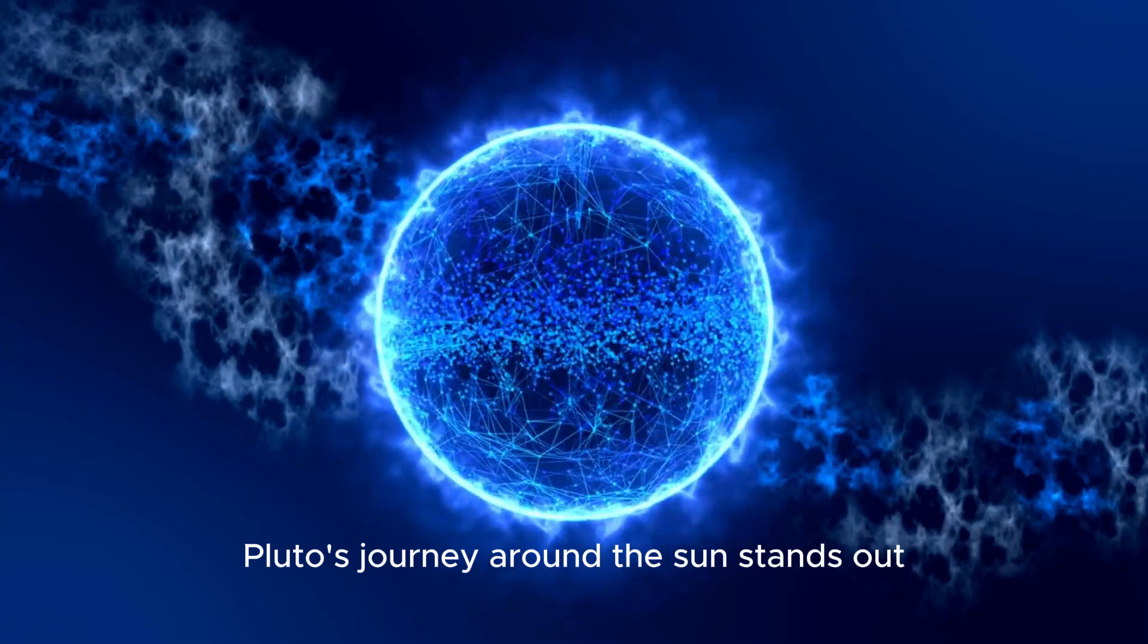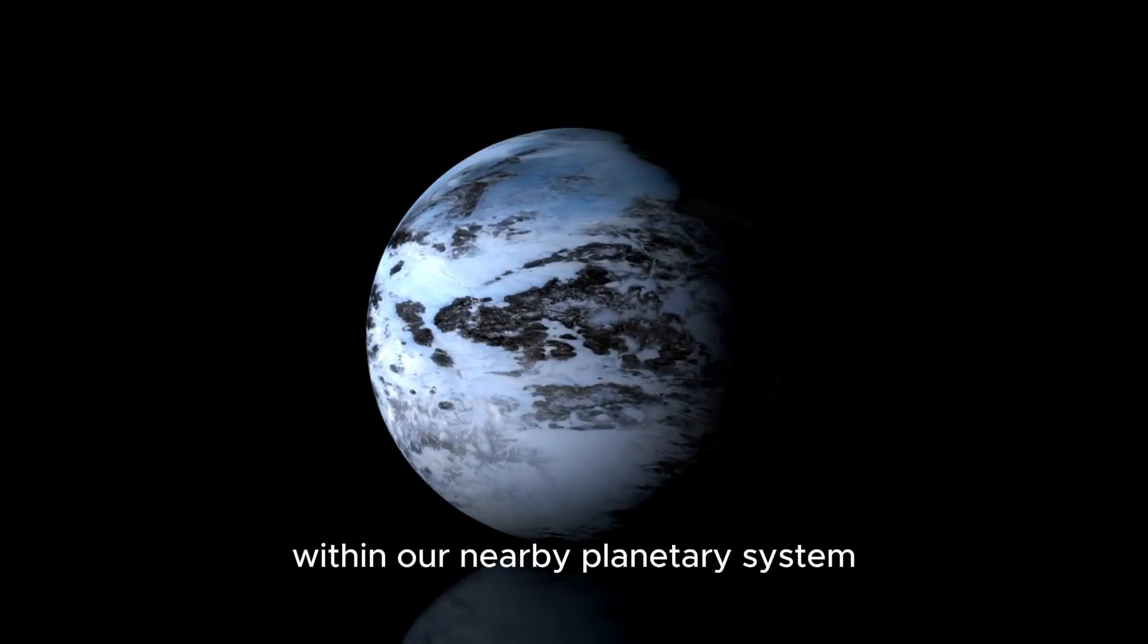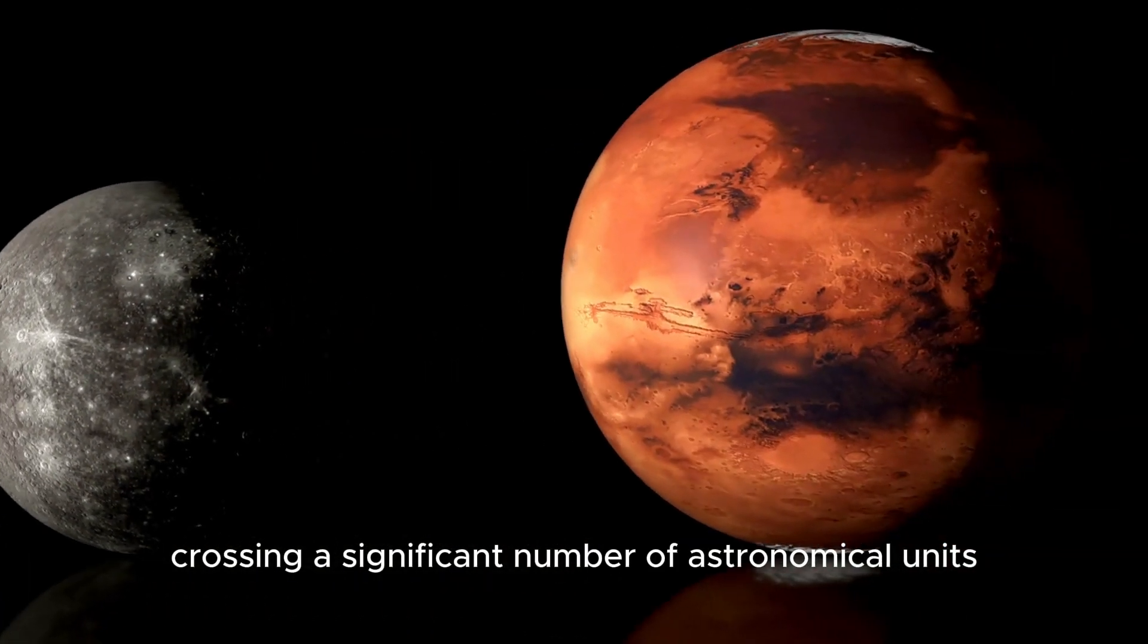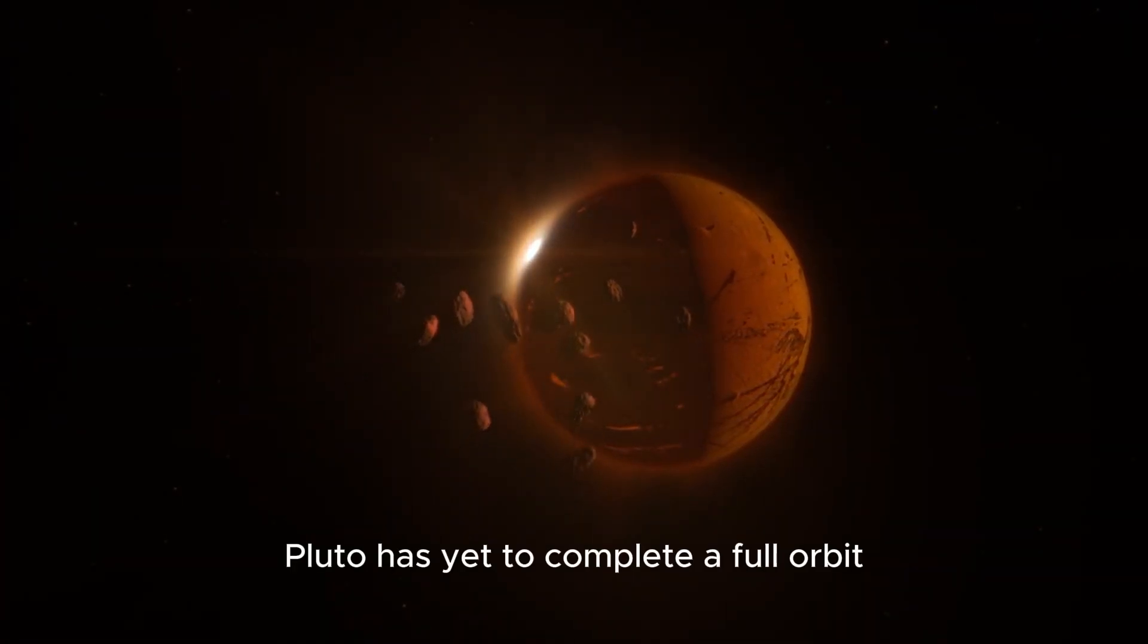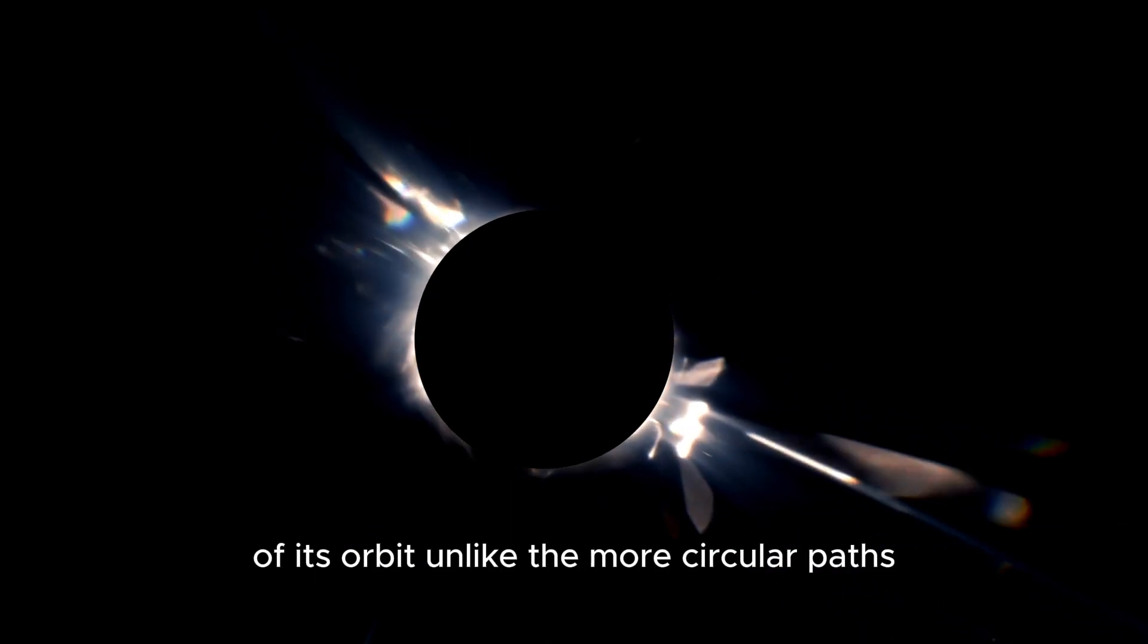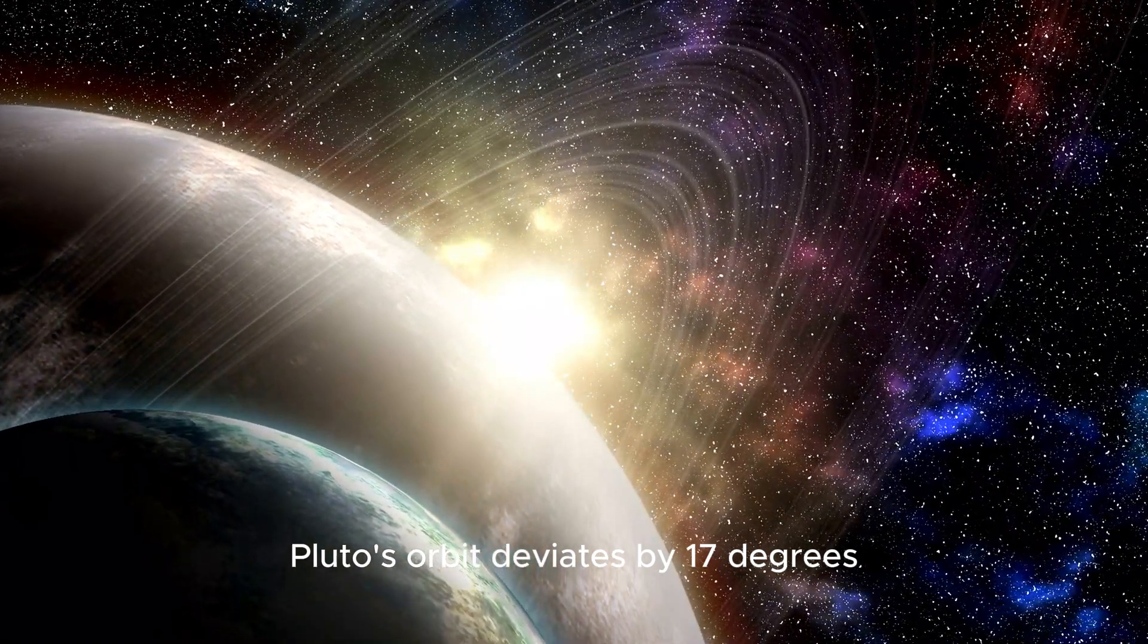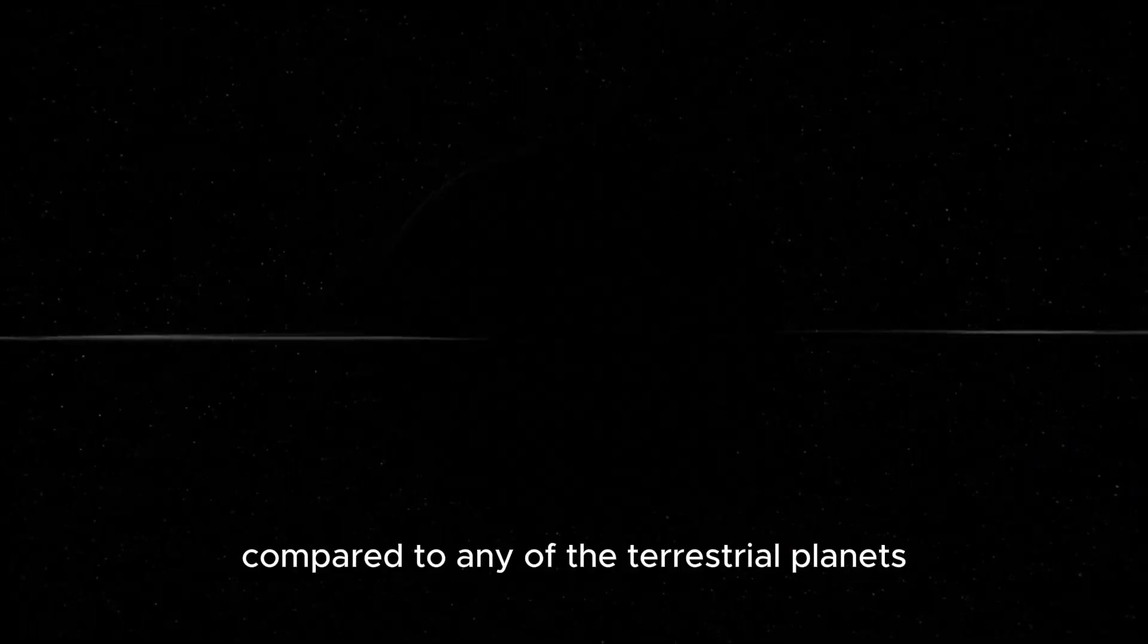Pluto's journey around the Sun stands out due to its remarkable characteristics. Its orbit is notably vast, crossing a significant number of astronomical units. Since its discovery in 1930, Pluto has yet to complete a full orbit. Adding to its character is the highly elongated nature of its orbit, deviating 17 degrees from the ecliptic plane.